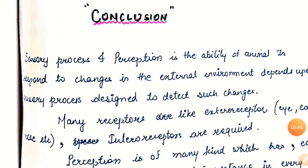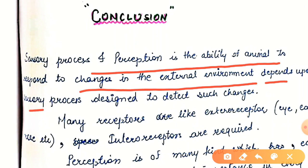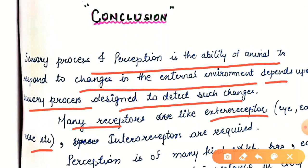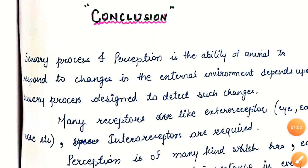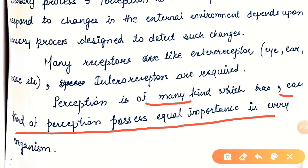Conclusion: sensory process and perception — the ability of an animal to respond to changes in the external environment depends upon sensory processes designed to detect such changes. Many receptors are external receptors such as eye, ear, nose, etc.; internal receptors are also required. Perception is of many kinds, and each kind of perception possesses equal importance in every organism.